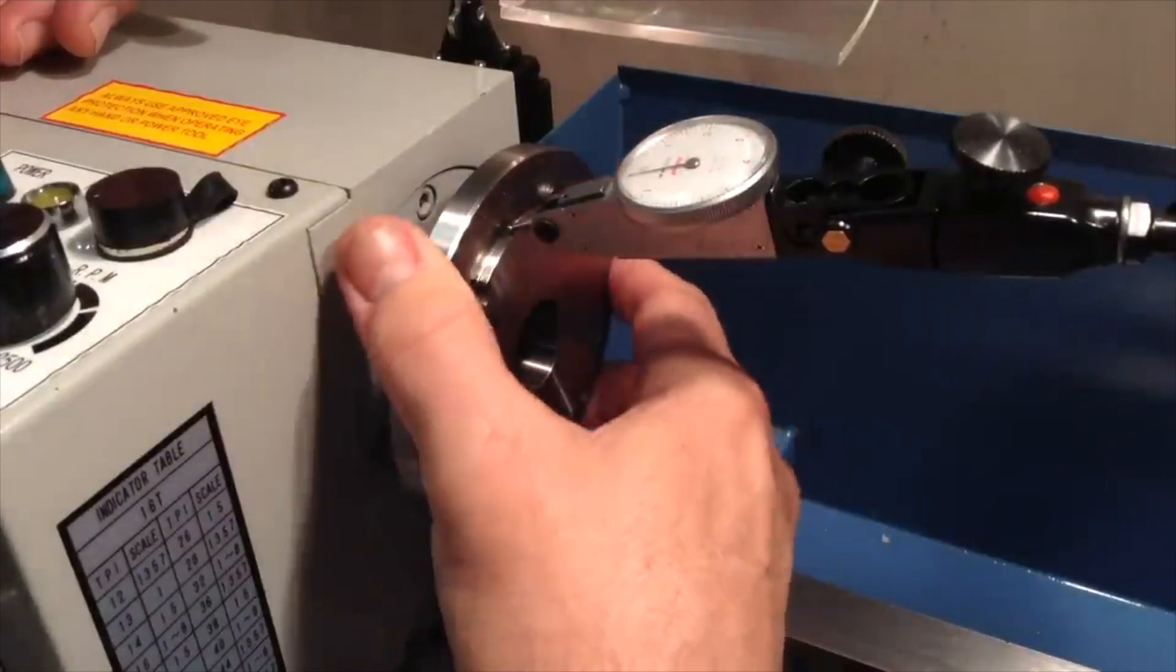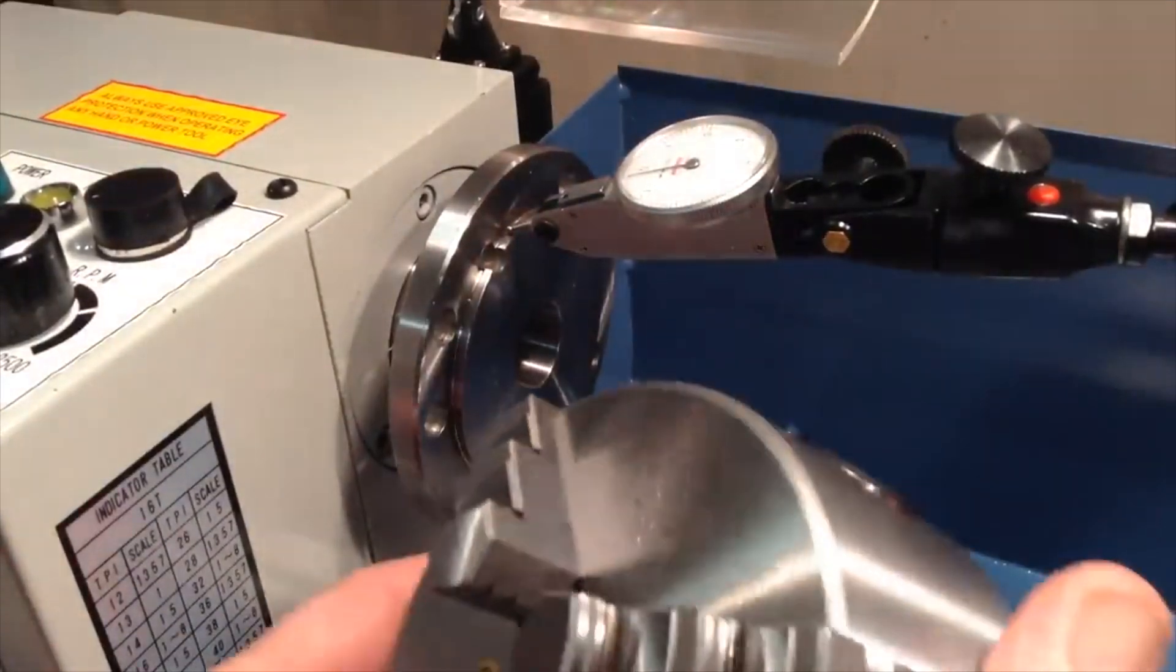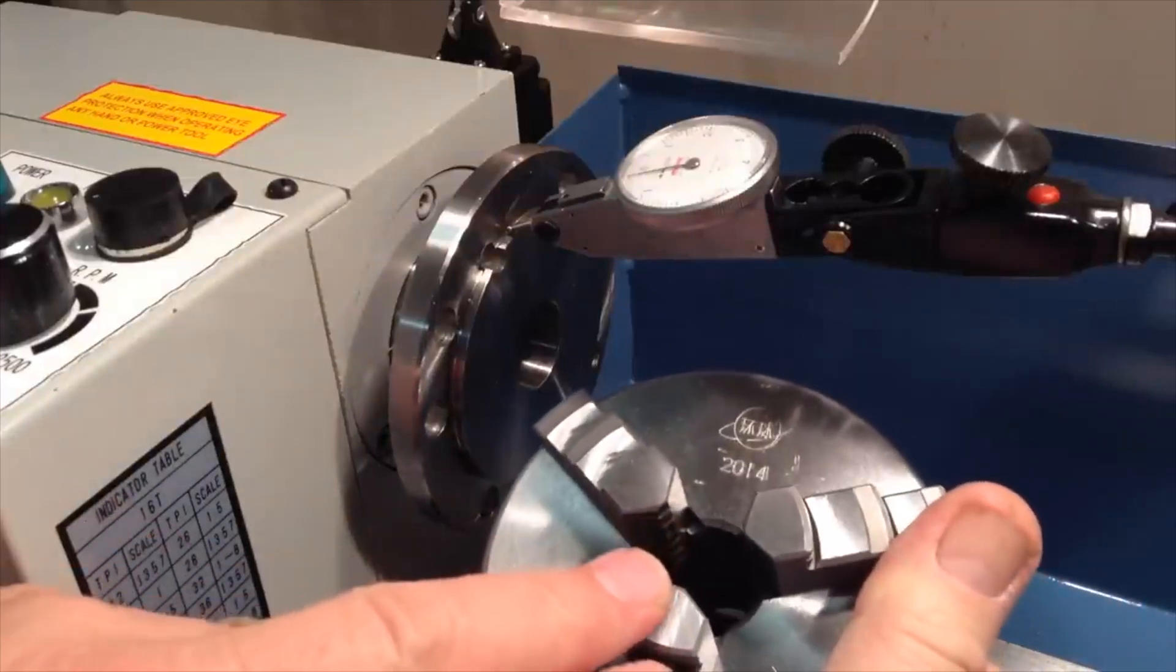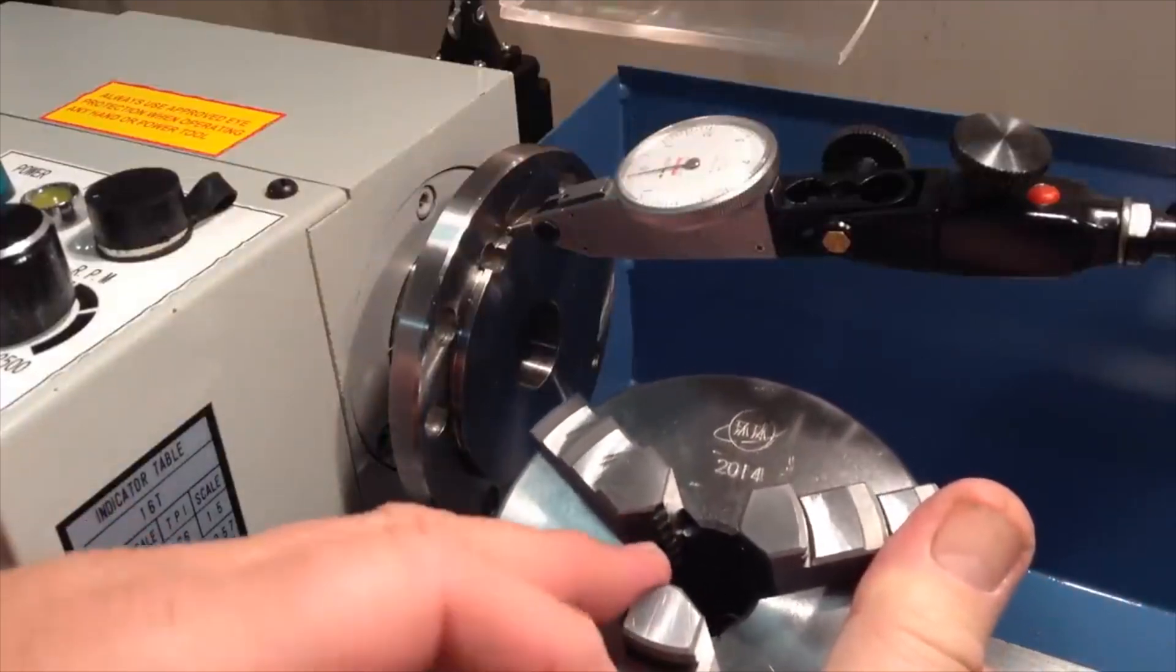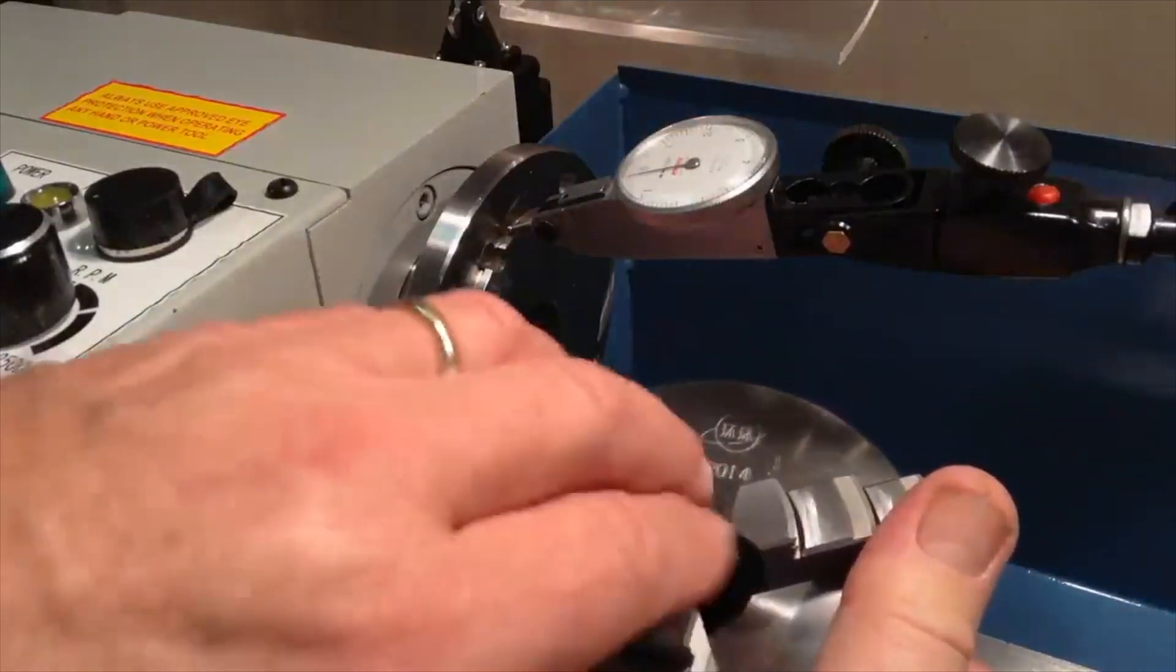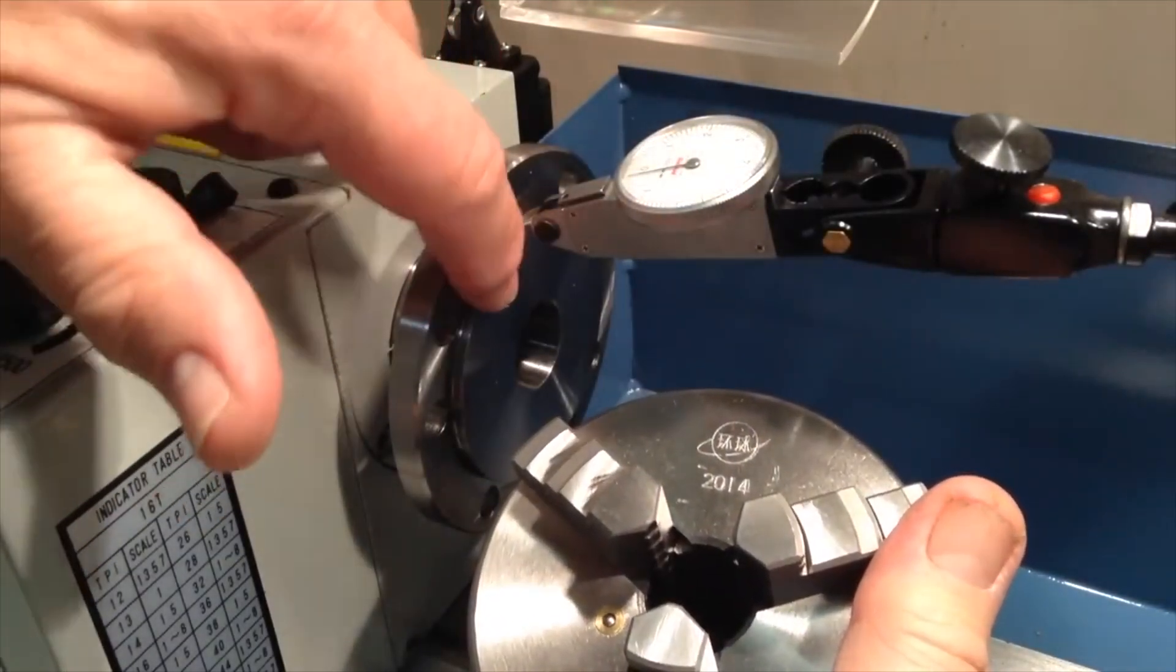Especially when you consider that on a typical low-cost three-jaw chuck like this, the jaws don't align any better typically than two or three thousandths, maybe even five thousandths concentricity when you close them down. So as long as this is a lot smaller variance then you get from the chuck itself, you don't have anything to lose as far as accuracy goes.